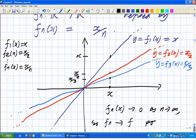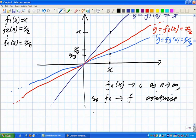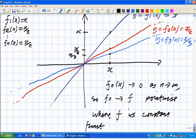Well, tending to 0 as n tends to infinity. So, the functions fn are converging to the function f pointwise where f is the constant function 0. That's f of x is 0 for all x. Which shows you that a sequence of unbounded functions can converge pointwise to a bounded function. And that'll do for today.